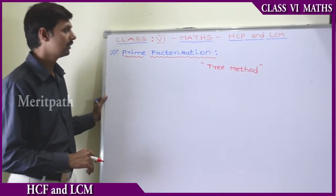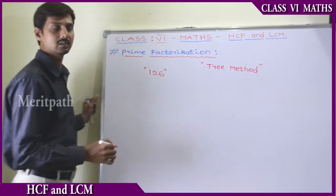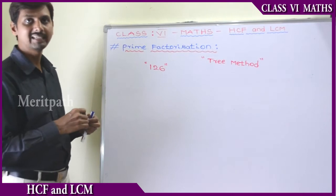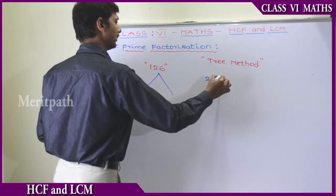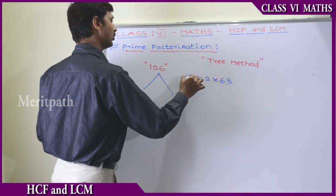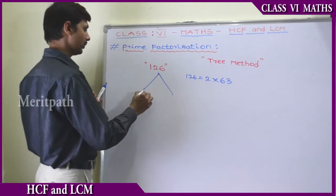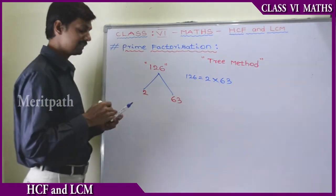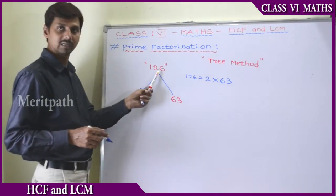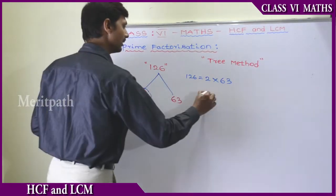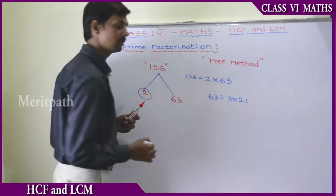Let us see prime factorization for 126 using the tree method. We know that 126 can be written as 2 into 63, because 126 equals 2 into 63. So we get 2 and 63. Here 2 is a prime number, so we leave this 2, because we are going to find prime factors for 126. Let us see for 63.